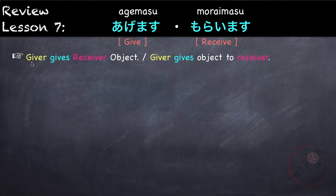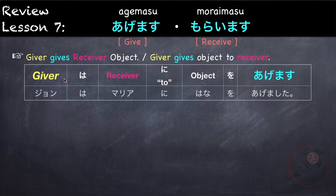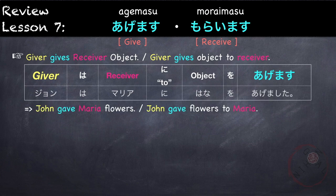For agemasu, the giver gives the receiver an object. The pattern is: giver wa, receiver ni — where ni means 'to' — followed by object o agemasu. For example, John wa Maria ni hana o agemashita, meaning John gave Maria flowers.